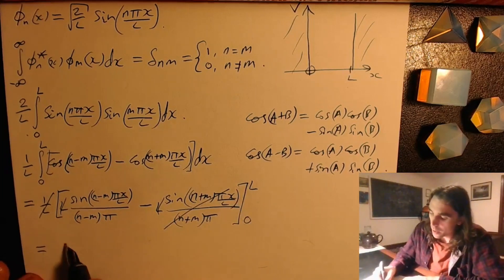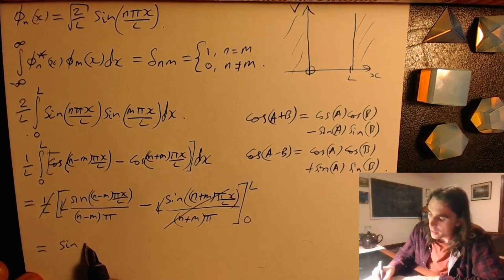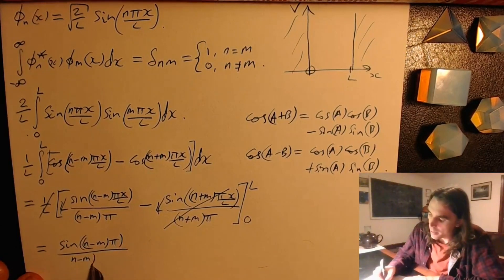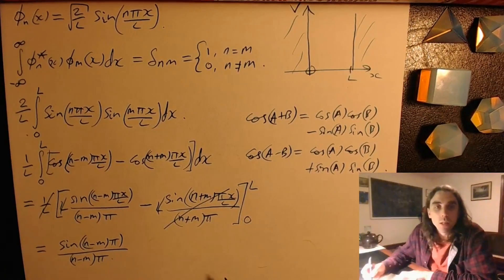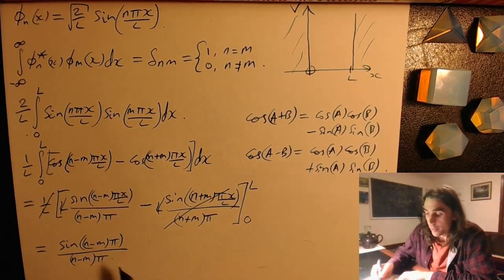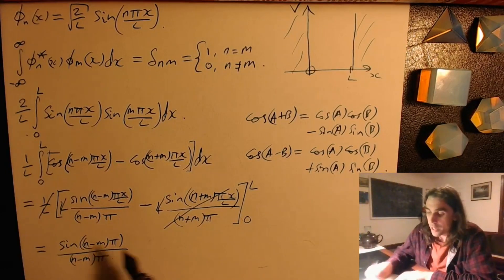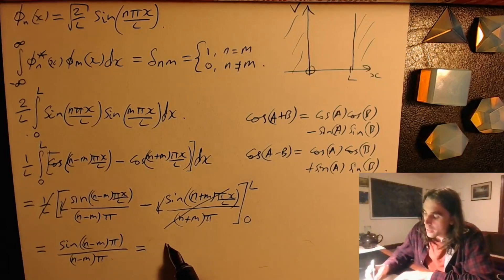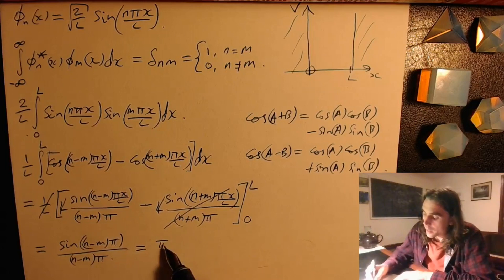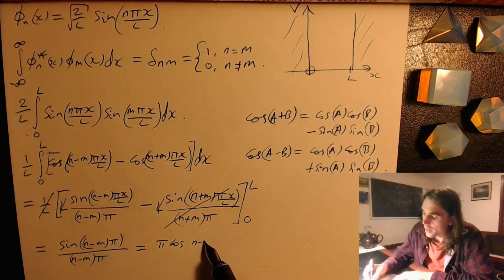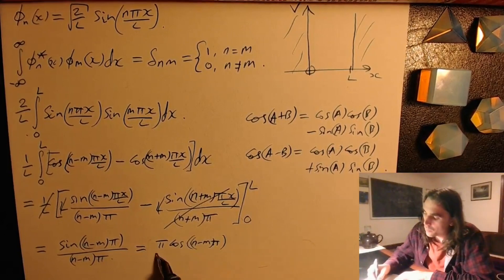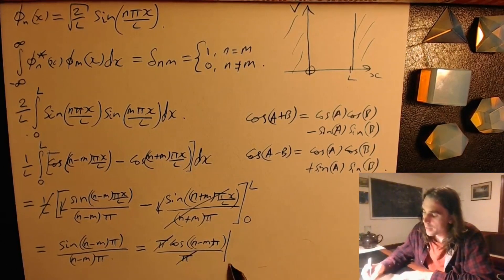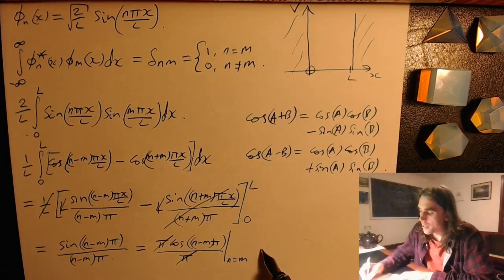So let's substitute it in, the only one we need to worry about. Sine of n minus m pi, divided by n minus m pi. So to work out what that is, we use L'Hôpital's rule, differentiate the top and bottom. And we can differentiate them with respect to n minus m. So this thing must equal cos of n minus m pi. Differentiate with respect to n minus m, and we just get a pi on the bottom. Cancel those. This is evaluated at n equals m. And so this thing equals one.